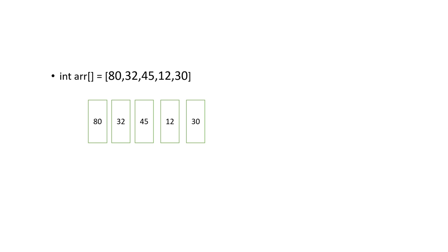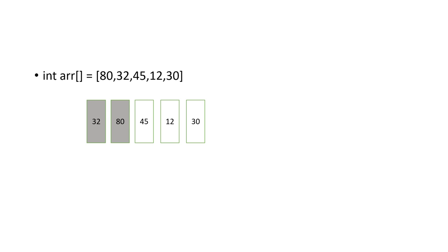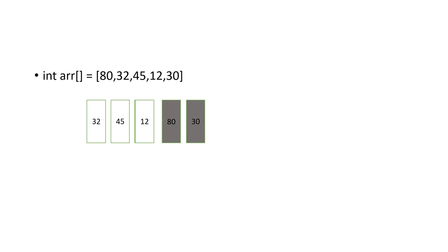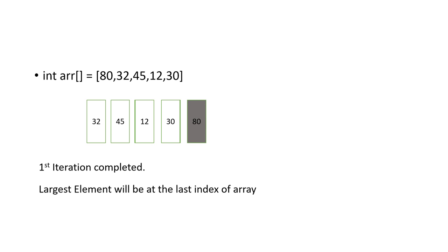Let's see with an example. We take the array: 80, 32, 45, 12, and 30 — not sorted in any order. In bubble sort, first it compares 80 and 32; since 80 is larger it swaps them, so 32 comes to the first position and 80 to the second. Then it compares 80 and 45 and swaps again, then 80 and 12, and finally 80 and 30 — swapping each time because 80 is greater — until 80 reaches the last position.